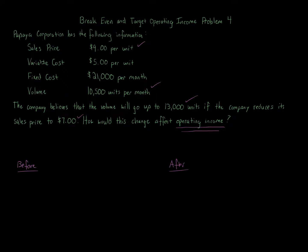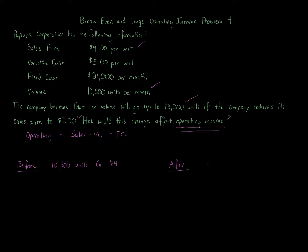This question is simply about plugging in numbers before and after. Operating income is sales minus variable costs minus fixed costs — that's all we're taking into account here, and we're given all that information. In the before scenario, we're selling 10,500 units at $9 each; in the after scenario, we're selling 13,000 units at $7 each.